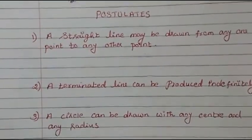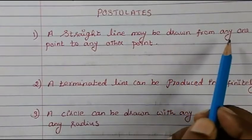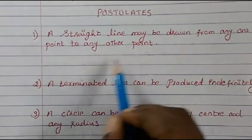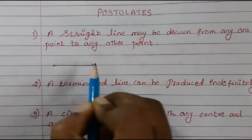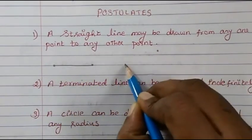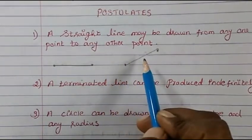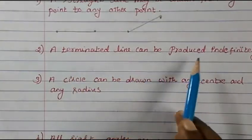Now let's move to postulates. Postulates are applicable only for geometry, unlike axioms which apply to any field of mathematics. The first postulate: a straight line may be drawn from any one point to any other point. So if you have any two points, you can always draw a straight line between them.